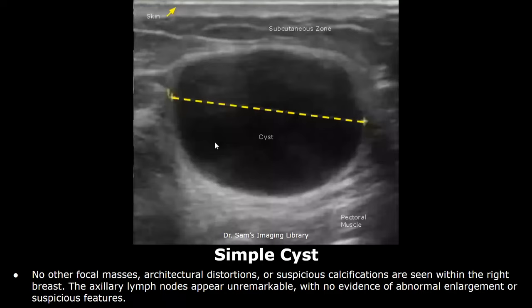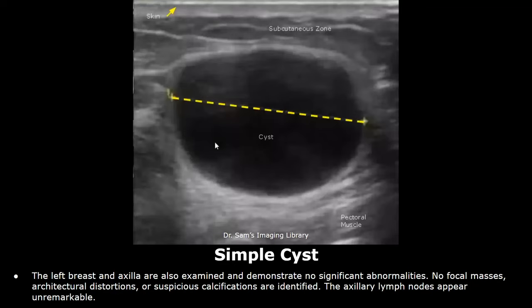After that, you can mention other focal masses or architectural distortions, or any suspicious calcifications which are seen. In this case, there were no other lesions. The axillary lymph nodes appear unremarkable and had no suspicious features. After that, you can write about the other breast. In this case, the left breast and axilla were normal and had no significant abnormalities.